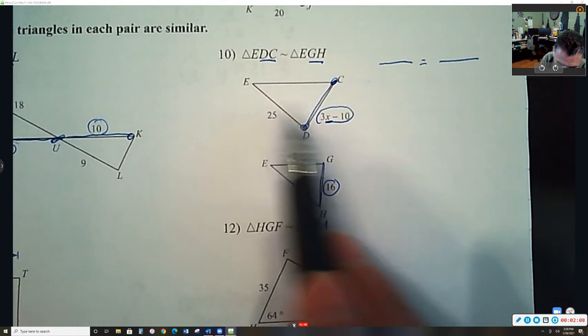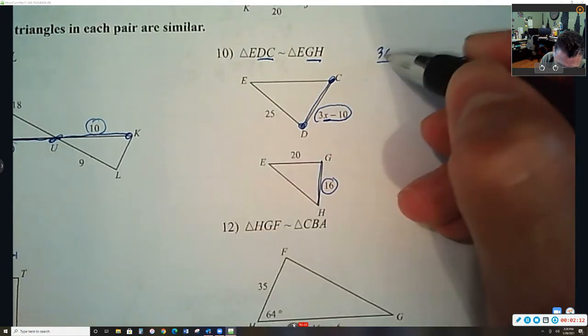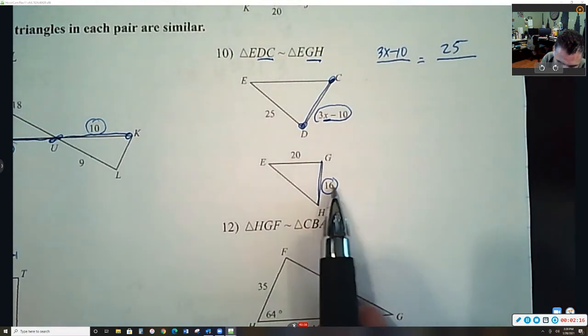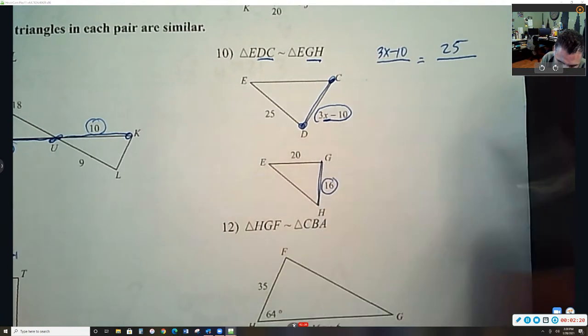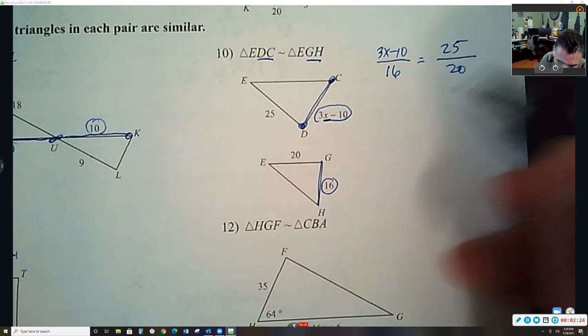So take these two from the top, 3x minus 10 and 25, and then put these two on the bottom. Again, the 16 has to go underneath this one. And then the 20 goes over there.